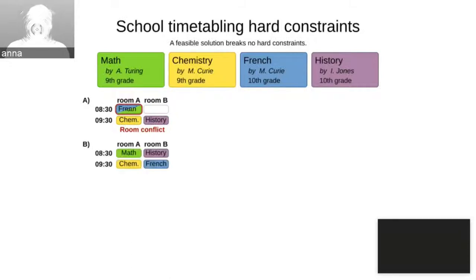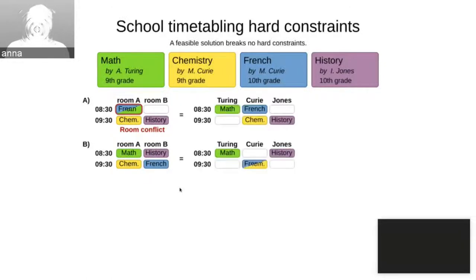So let's fix it and go for Proposal B. In Proposal B, we have each and every lesson assigned. But you could probably notice that there is a problem here. And if we go for the teacher's view, we will see that chemistry and French is being taught by Marie Curie, the same teacher at the same time in different rooms. It's just not going to work. So this is the teacher conflict.